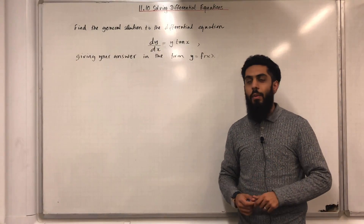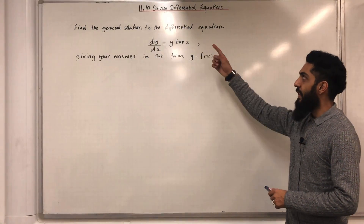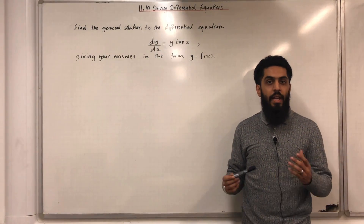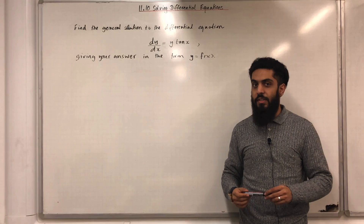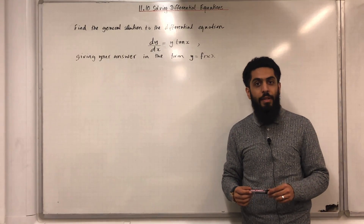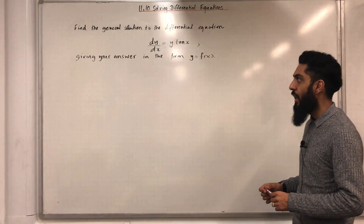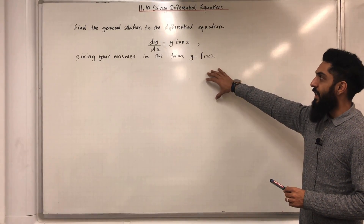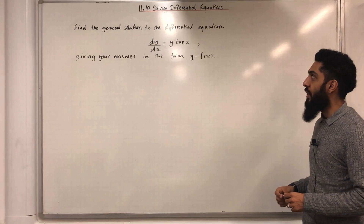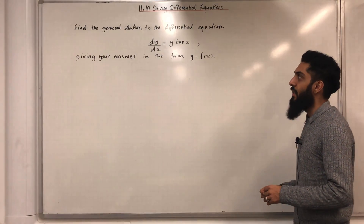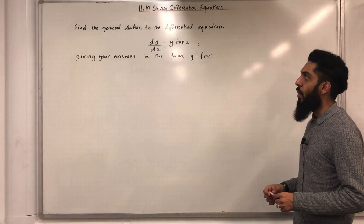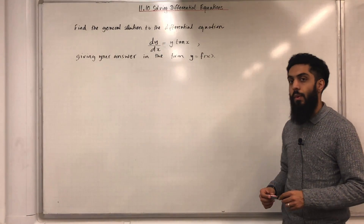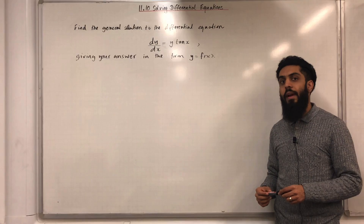Welcome back. In this video, I'll be looking at 11.10 solving differential equations. 11.10 represents chapter 11, section 10 of the Pearson A-level Pure Mathematics 2 textbook. Over here, it says: find the general solution to the differential equation dy over dx equals y tan x, giving your answer in the form y equals f of x.